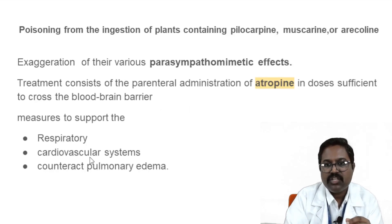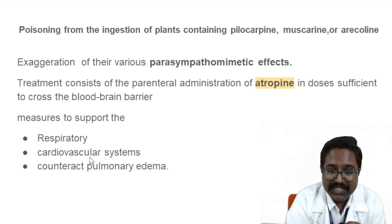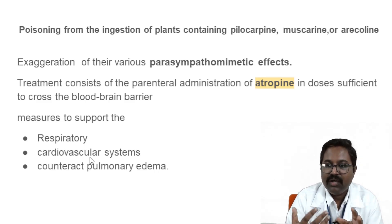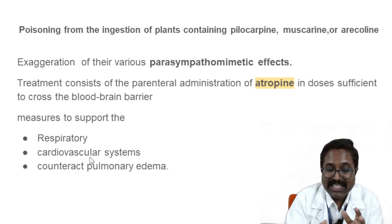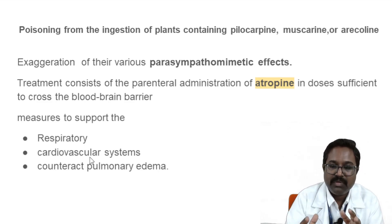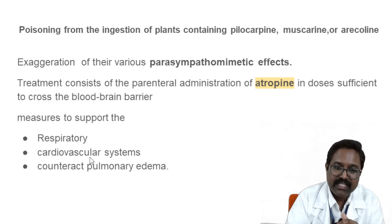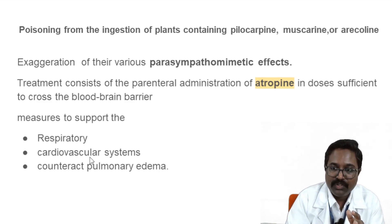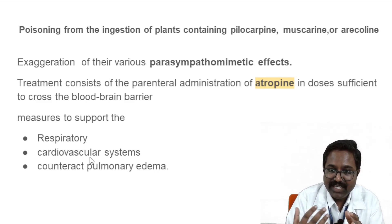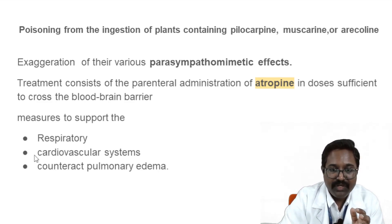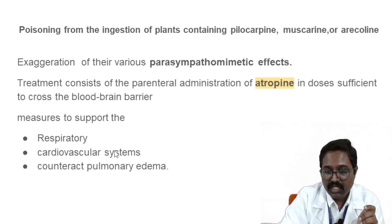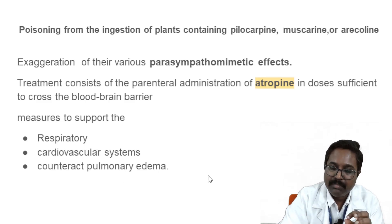Regarding toxicology: poisoning due to drugs like pilocarpine or muscarine causes exaggeration of parasympathomimetic actions — increased muscarinic activity. The drug of choice for any such parasympathomimetic exaggerated effects is atropine, the muscarinic antagonist. You also need to manage respiration, cardiovascular symptoms, and bronchial edema.